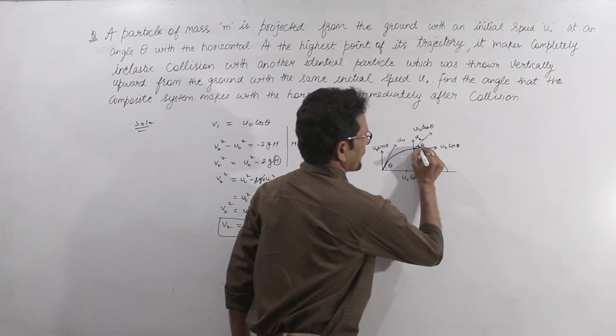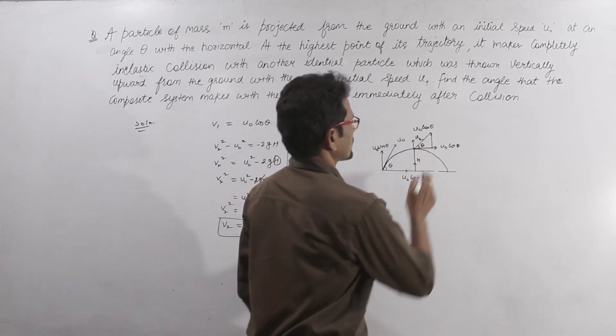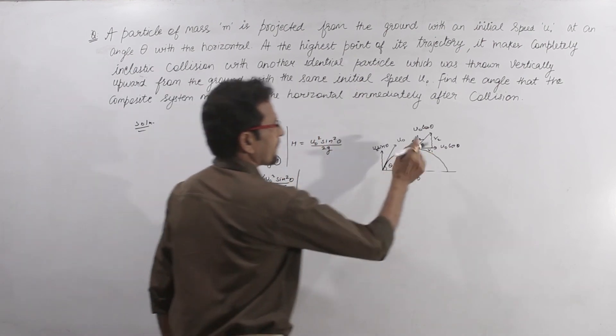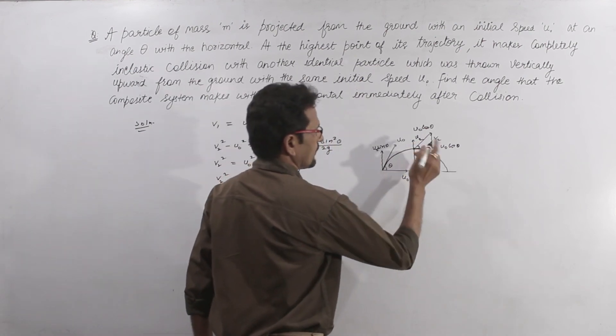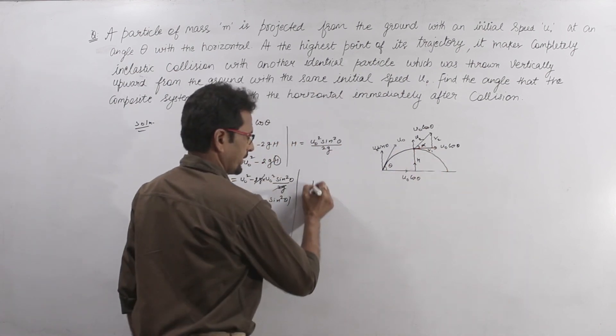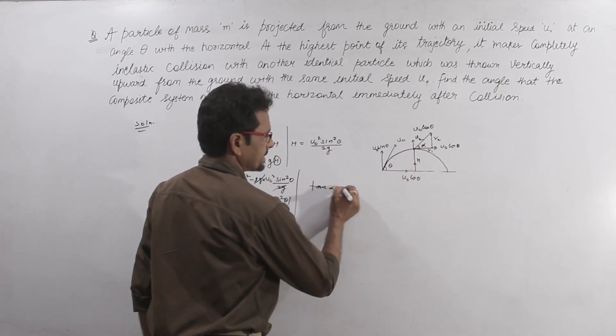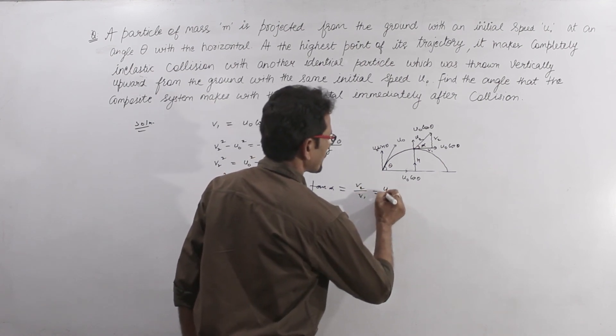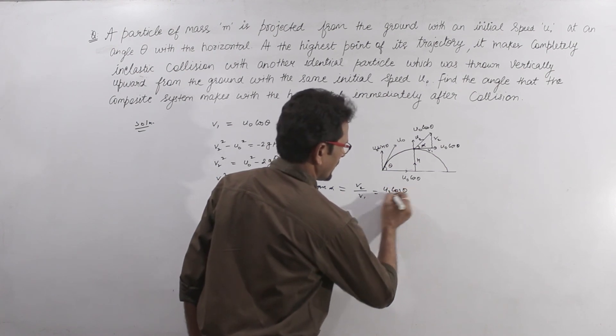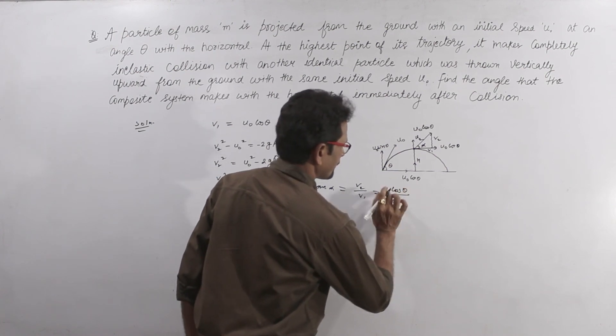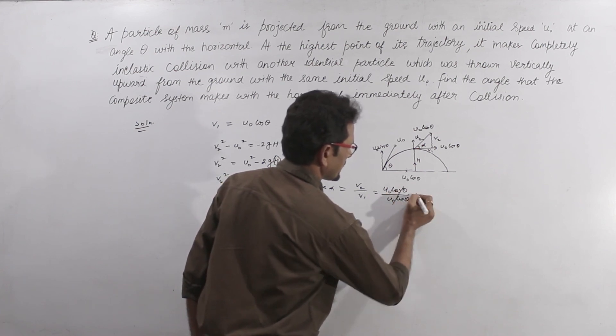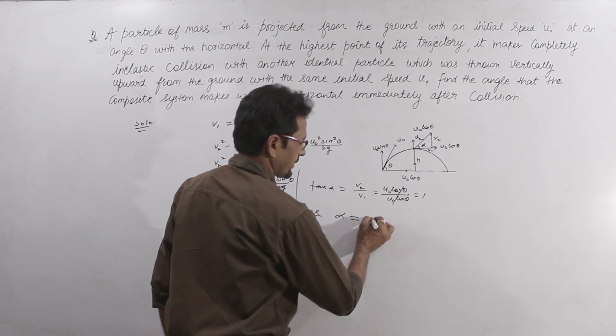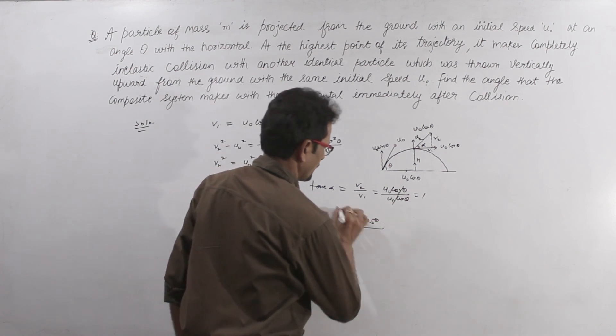We draw this perpendicular. This one is v2 and this one is v1. Let this angle be alpha. Then tan alpha equals v2 upon v1, or u0 cos theta upon u0 cos theta, which equals 1. Therefore alpha equals 45 degrees with the horizontal.